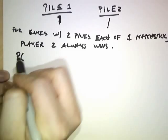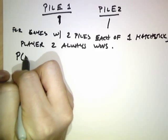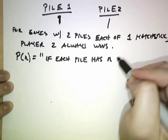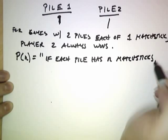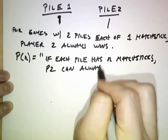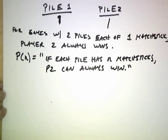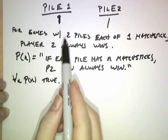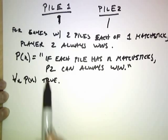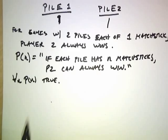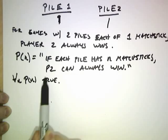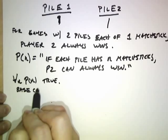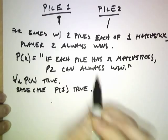We want to prove the claim that player 2 can always force a win by induction. Let's write a predicate: p of n is the statement that if each pile has n matchsticks, player 2 can always win. We want to prove that for all n, p of n is true. And what we just proved is the base case — we proved that p of 1 is true.